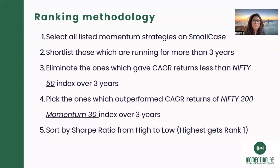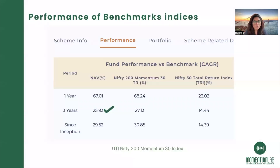Whatever is remaining will be the final list that needs to be ranked as the top five. The ranking is done using something called a Sharpe ratio, which is the excess return that we get when we make an investment. On a good day, our Sharpe ratio has to be greater than one — that is when we consider that the Sharpe ratio is good.